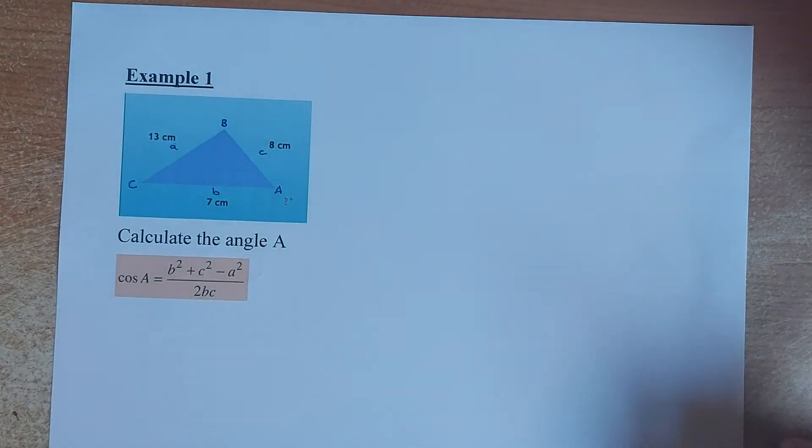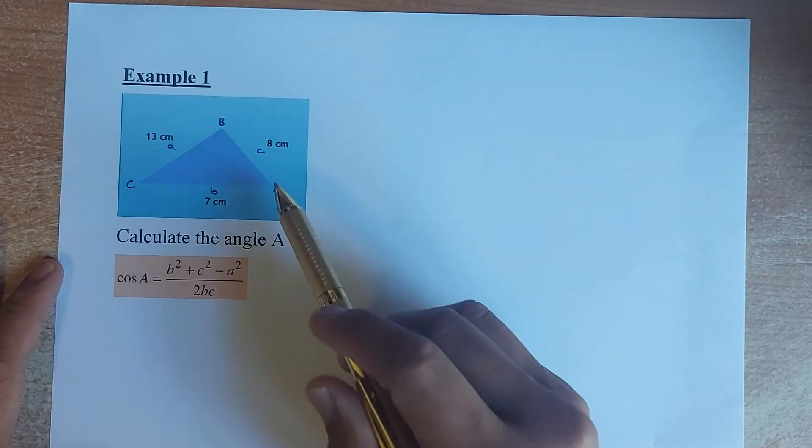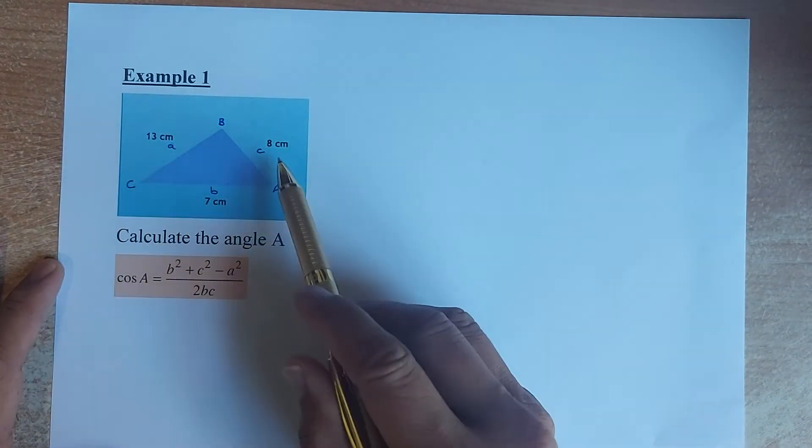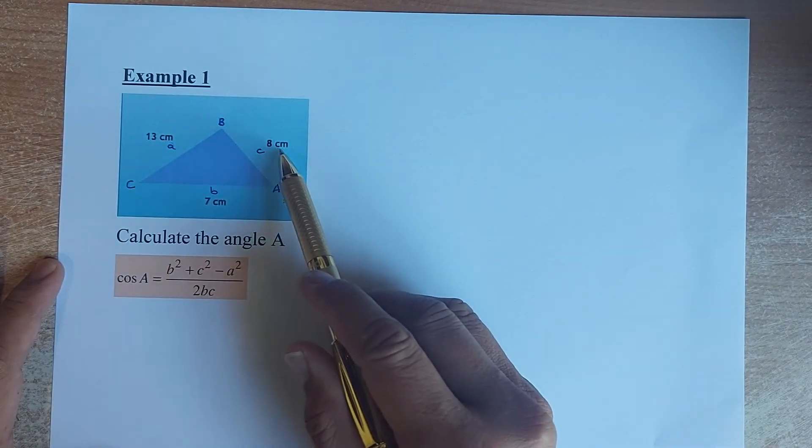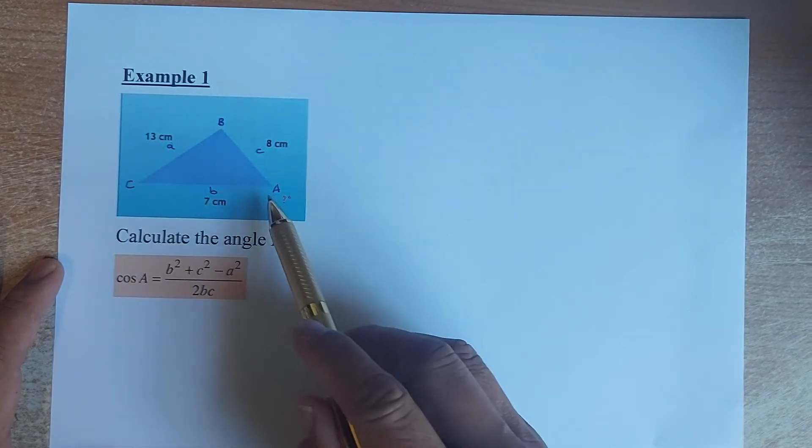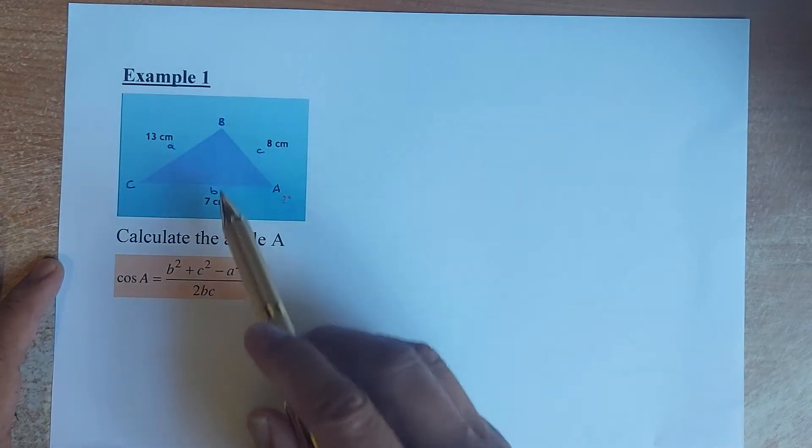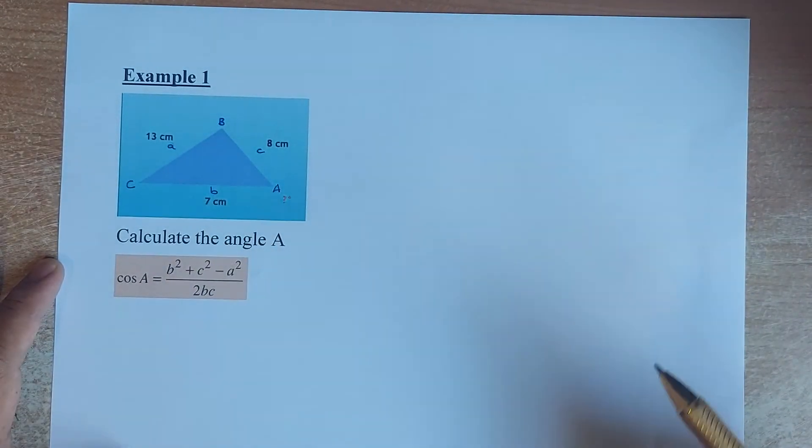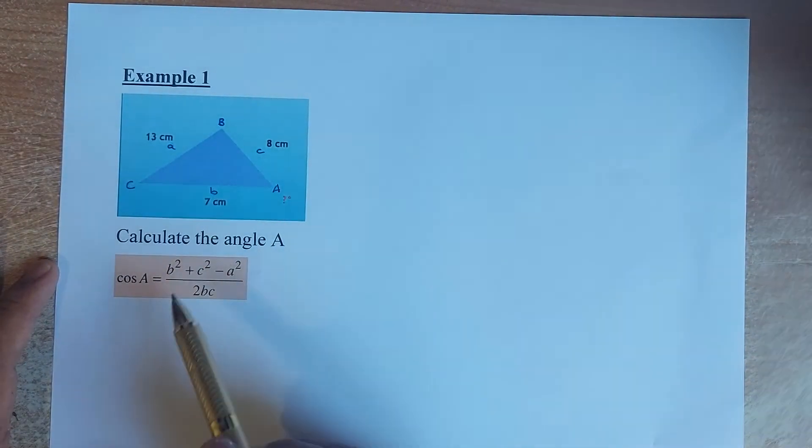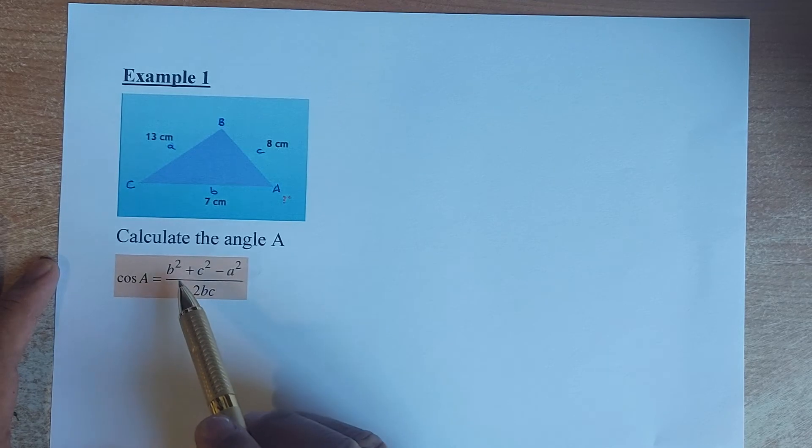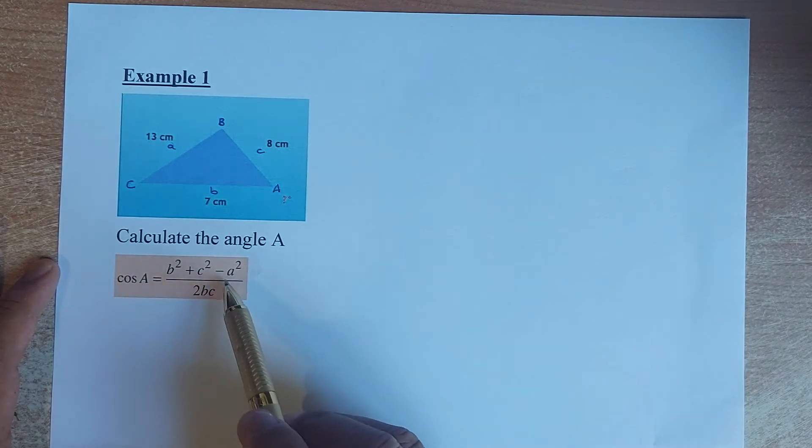We shall look at the first example. The first example looks like that. So you have a triangle ABC and the side opposite C is 8 cm, the side opposite uppercase A is 13, and the side opposite B is 7 cm. So again, the formula is cos A equals B squared plus C squared minus A squared divided by 2BC.